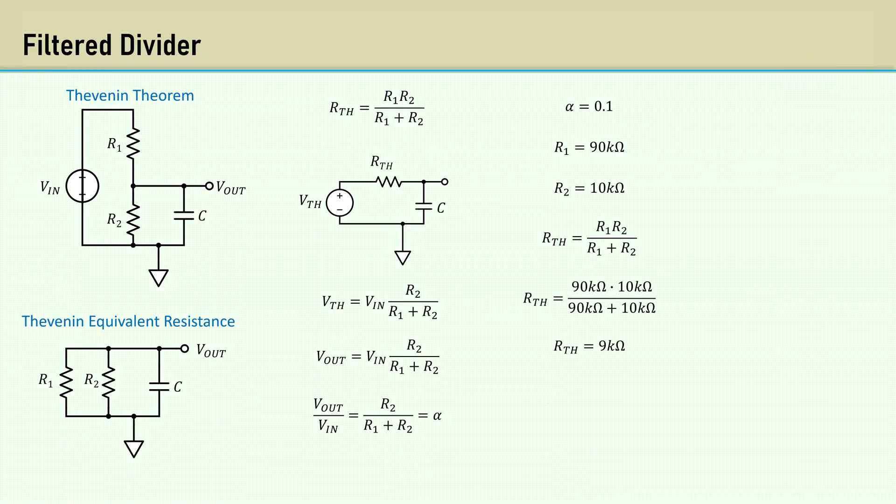This is the cutoff frequency of a single pole low-pass filter. Rearrange to solve for the capacitor. Now let's design it for a cutoff frequency of 100 Hz. C comes out to 0.177 microfarads.